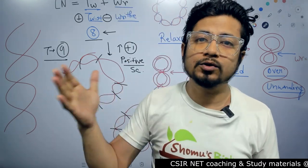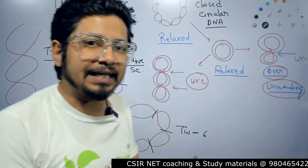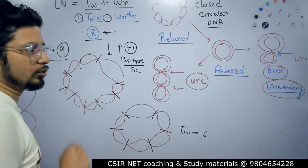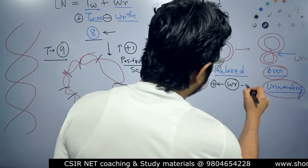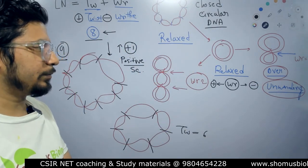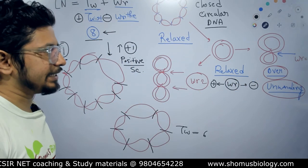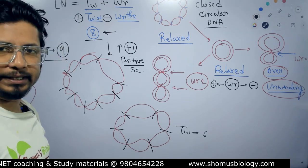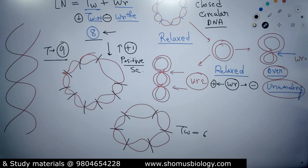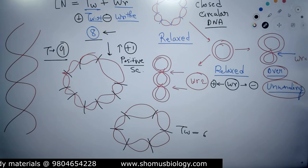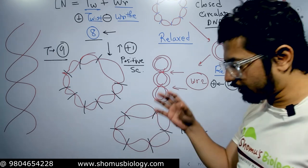Linking number has two components: twist and writhe. Twist can be positive and negative, as explained. Now about writhe — the whole two strands of the DNA wrapped around itself — writhe zero is the relaxed state, writhe one is one wrap, writhe two is two wraps. In the case of writhe, we also have a positive value and a negative value. The positive and negative writhe signifies the pattern of how exactly the DNA helix is folding, because the helix folds in multiple ways. The writhe value denotes the directionality of the folding of the helix.